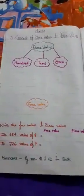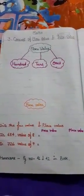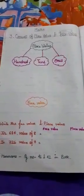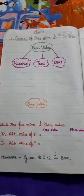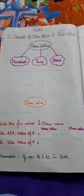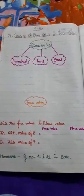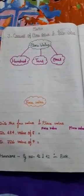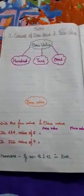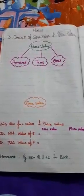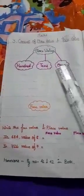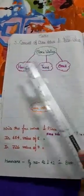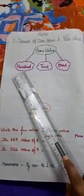Place value can be defined as the place represented by a digit in a number on the basis of its position in the number, such as ones, tens, and hundreds.